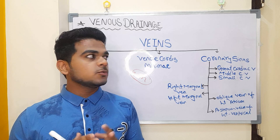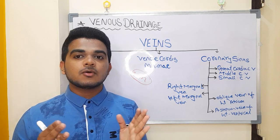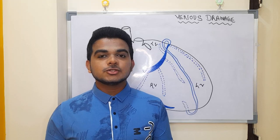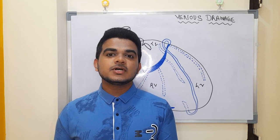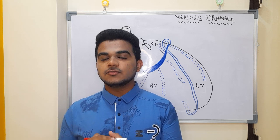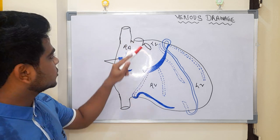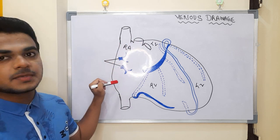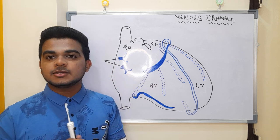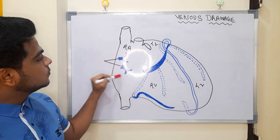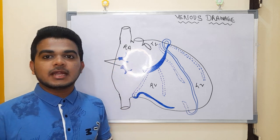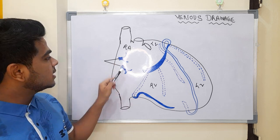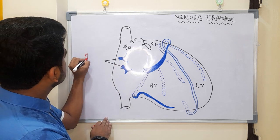Now I will show you on the diagram exactly where these veins are present. The anterior cardiac vein — if you know this structure, this is the right atrium. On the surface of the right atrium there are two veins clearly visible. These veins collect the venous drainage from the right atrium and directly drain into the right atrium. These are the anterior cardiac veins.